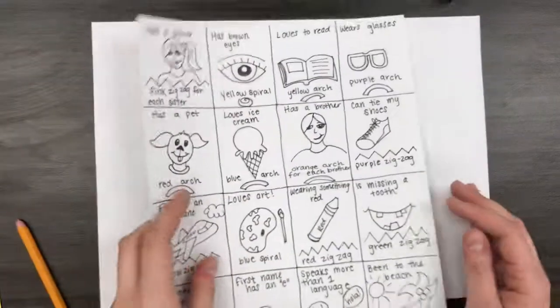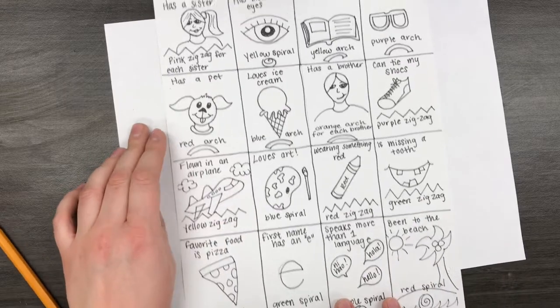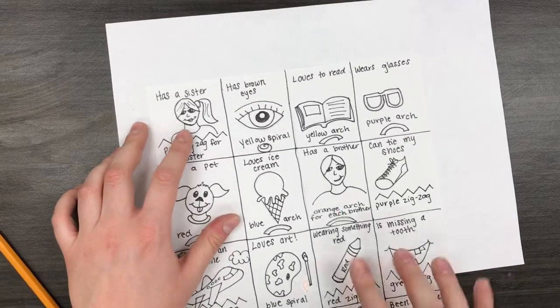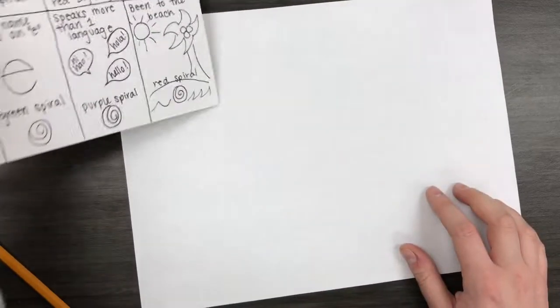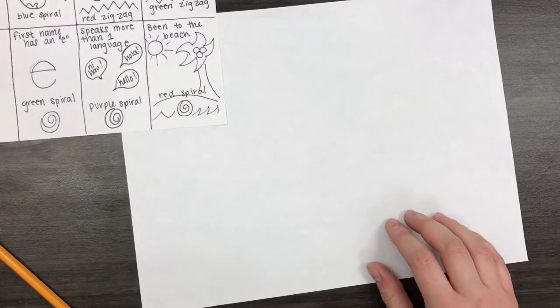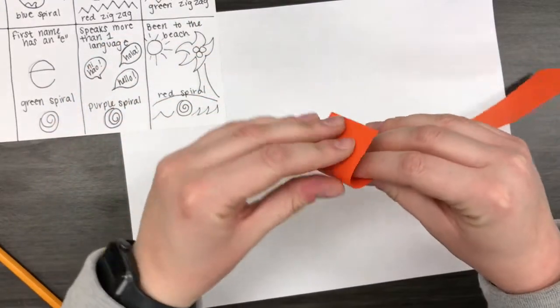I'm going to start making my paper sculpture. You're going to get this handout, and you need to pick five things about you. The first one that I'm going to pick is that I have two brothers, so I need to make an orange arch because it says orange arch for each brother. So since I have two brothers, I'm going to take two orange strips of paper.